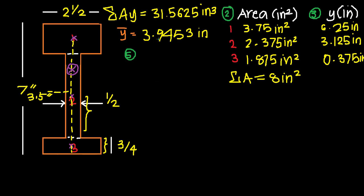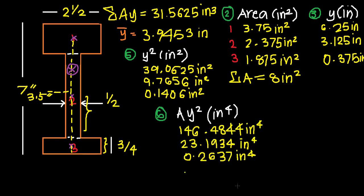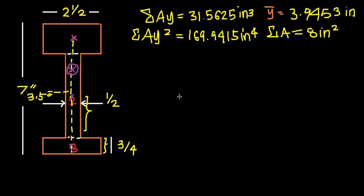So now let's head on to our fifth step. The fifth step is basically squaring each value per shape's y position. Now for our sixth step, it's simply multiplying our y squared with our individual shapes' areas. Accordingly, we have these values. And of course, we also need to figure out the summation of a y squared: 169.9415 inches to the power of 4. So now we've gathered all of our essential requirements.